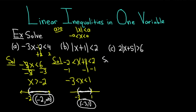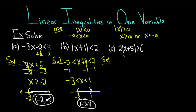Finally, we have part c. There is a formula we can use: if you have the absolute value of x bigger than a, this means that x is bigger than a or less than negative a. In this case, we can't quite use the formula yet because we need to isolate the absolute value. Let's start by dividing by 2 so it fits the form of the formula. Dividing by 2, we have the absolute value of x plus 5 is bigger than 3.